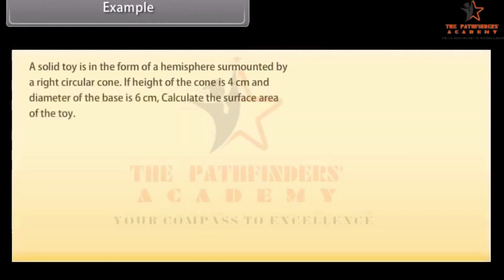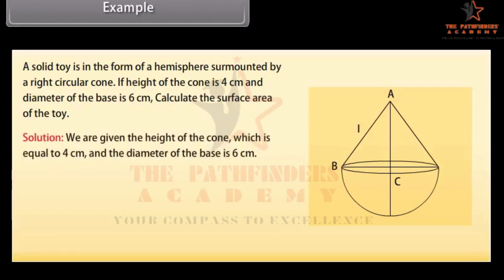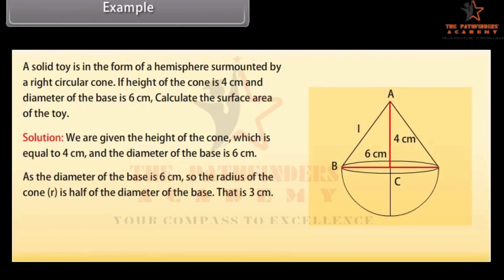A solid toy is in the form of a hemisphere surmounted by a right circular cone. If the height of the cone is 4 cm and the diameter of the base is 6 cm, calculate the surface area of the toy. We are given the height of the cone equal to 4 cm and the diameter of the base is 6 cm. The radius R is half the diameter, that is 3 cm. Also, the radius of the hemisphere is 3 cm.